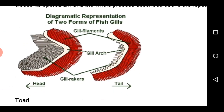Observing this diagram — this is the gill, and there we have the gill filament, which is the portion where gaseous exchange occurs. Then we have the gill arch, which is the area upon which the gill filament is built. The gill raker on the other end prevents food particles from entering into the gill chamber.